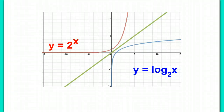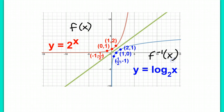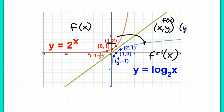You can also see that by looking at the coordinates. The key points on y equals 2 to the x are: negative 1, one-half; 0, 1; and 1, 2. After you take the inverse, those points flip to: 2, 1; 1, 0; and one-half, negative 1 — and these are on the graph of y equals log base 2 of x. So if the point (x, y) lies on f(x), then the point (y, x) must lie on the inverse of f(x).